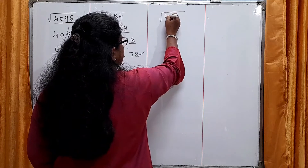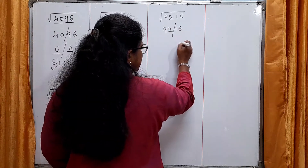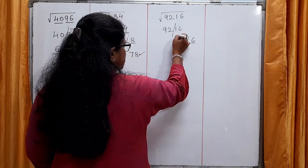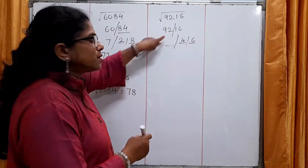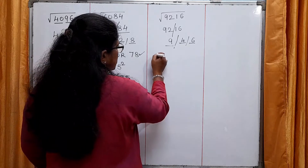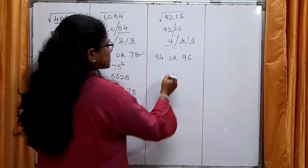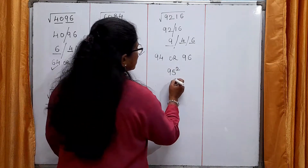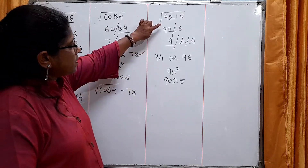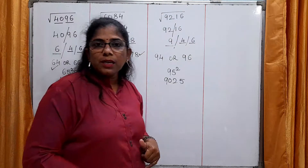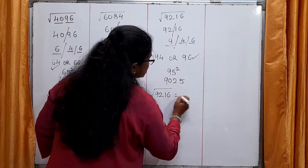One more example: square root of 9,216. Divide it into parts. Last digit is 6, so the expected unit's place is either 4 or 6. The number here is 92. The perfect square less than 92 is 81, which is 9×9. So the tens digit is 9, and the possible answer is 94 or 96. To check: 95 squared — 5×5 is 25, and 9×10 is 90 — so 95 squared is 9,025. Our number is 9,216, which is more than 9,025. So the correct answer is 96. The square root of 9,216 is 96.